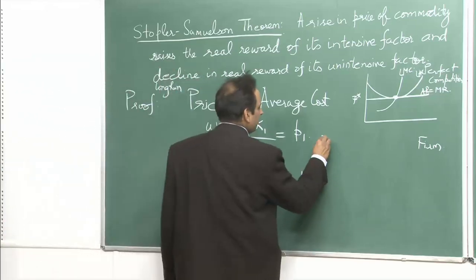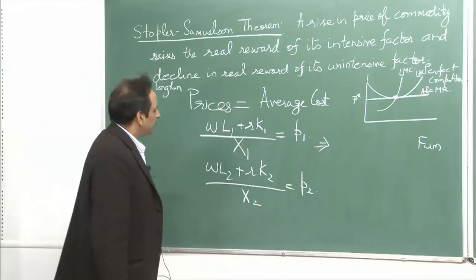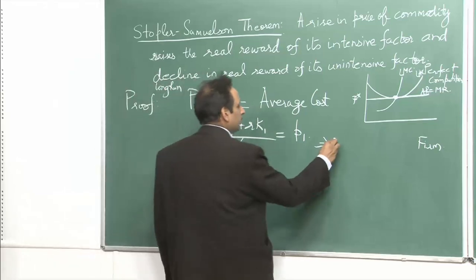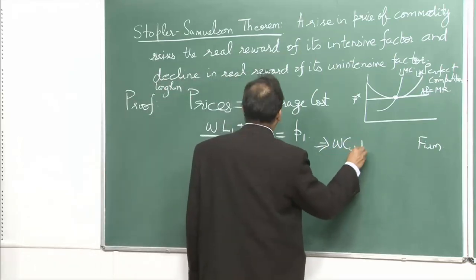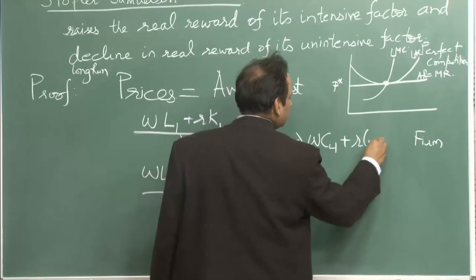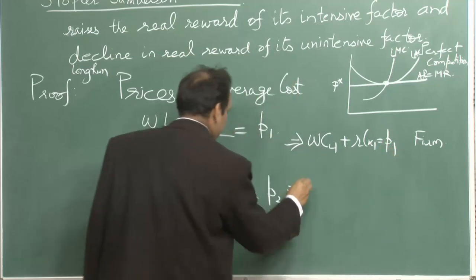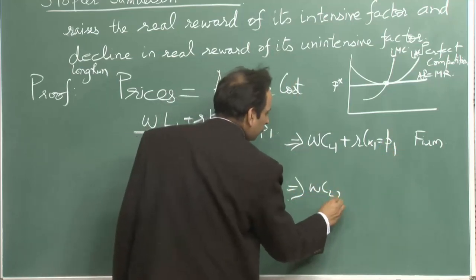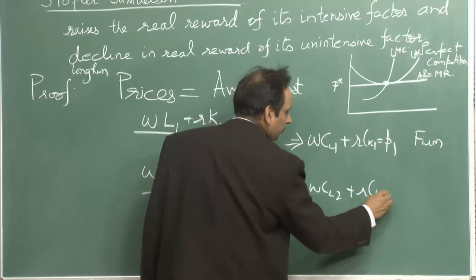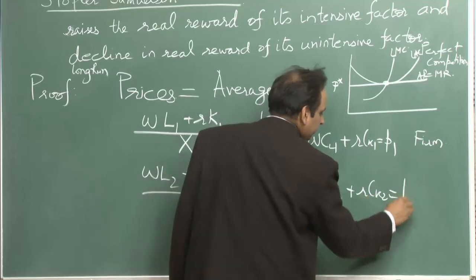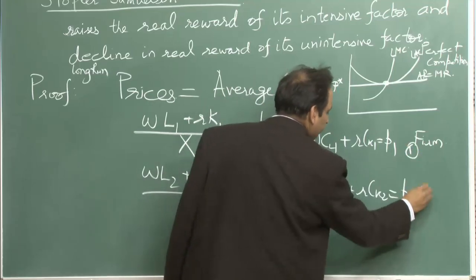We can express this in terms of unit labor and capital requirements: W·C_L1 + R·C_K1 = P1 (equation 1) and W·C_L2 + R·C_K2 = P2 (equation 2), where C_L1 is the amount of labor required to produce one unit of good 1, C_L2 is the amount of labor required to produce one unit of good 2, and similarly for the unit capital requirements.